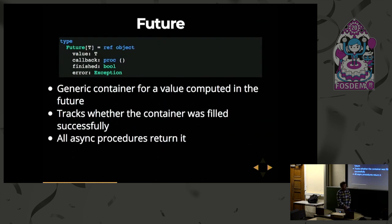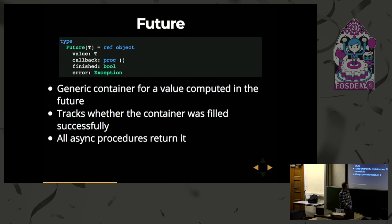The future is just a simple object which acts as a container. It's a simple generic type definition which takes a generic type T. There are four fields: a value which stores the value stored in the future; a callback which you can set to a procedure, and when the future gets completed that callback gets called; a finished field to track whether the future has completed or not; and an exception for when some error occurs during the computation of your future.